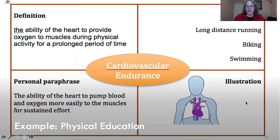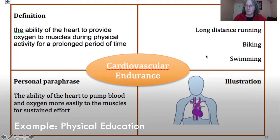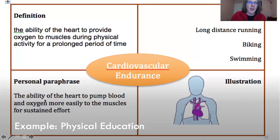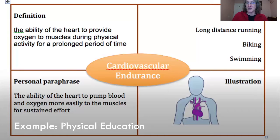This one is from physical education, and cardiovascular endurance is a really central topic and idea in physical education. In this case, we have a definition, we have examples of exercises and activities that promote cardiovascular endurance, a personal paraphrase, and an illustration. Key ideas help students really understand that idea. Because physical education is about movement, the exercises and physical activity that promotes this concept really helps tie the conceptual cognitive domain of physical education with the psychomotor components. A personal paraphrase is different than a student-generated sentence, because I have to use the words but it doesn't actually have to be a complete sentence — I have to really show and demonstrate that I understand the term.